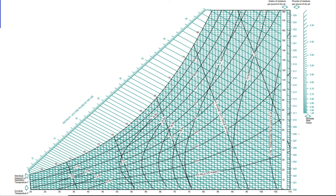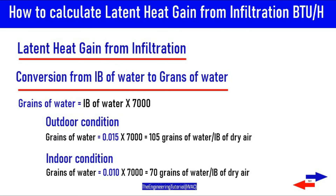The conversion from pounds of water to grains of water is: pounds of water × 7000. For the outdoor condition: 0.15 pounds × 7000 = 1050 grains of water per pound of dry air. For the indoor condition: 0.10 pounds × 7000 = 70 grains of water per pound of dry air.